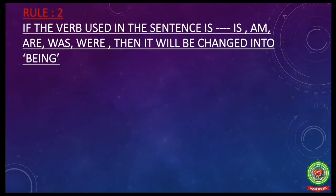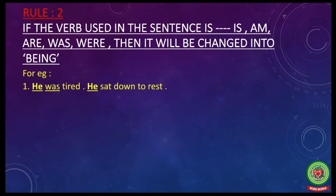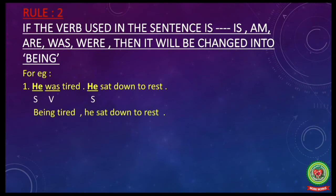Rule number two: if the verb used in the sentence is 'is,' 'am,' 'are,' 'was,' or 'were,' then it will be changed into 'being.' For example: 'He was tired. He sat down to rest.' In this sentence both subjects are the same and the helping verb 'was' is used, so 'was' will change into 'being.' The answer will be: 'Being tired, he sat down to rest.'